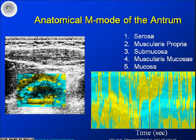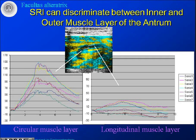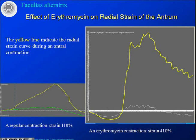We can then analyze in which layers the different contractile activity occurs. Looking at the muscle layer of the GI tract, we were actually able to show there is a difference between the two wall layers: the outer longitudinal muscle layer and the inner circular muscle layer have quite different contractile activity during a contraction. If we give the patient a drug that stimulates contractility — like erythromycin — this is normal activity at approximately 100% elongation, but with erythromycin the contraction and strain in the GI wall is considerably increased, at least 400% compared to the normal situation.